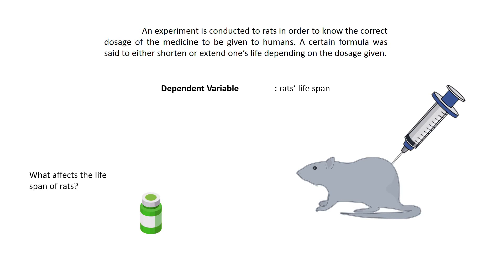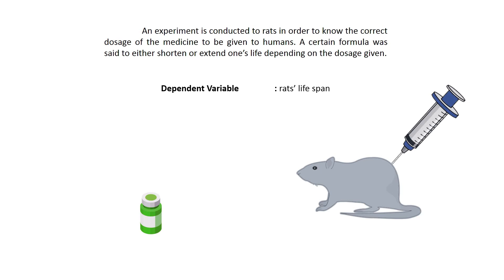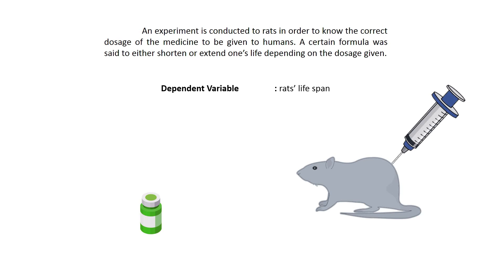So for us to identify the independent variable, we need to ask: what affects the lifespan of rats? Ano yung naka-apekto sa lifespan ng rats? The answer could be the syringe and the formula, but we need to be very specific. What specifically affects the rats? The answer, of course, is the formula dosage — or the dosage given. So our independent variable would be the formula dosage or the dosage given.